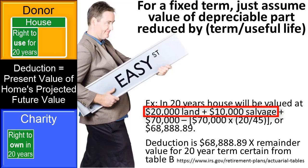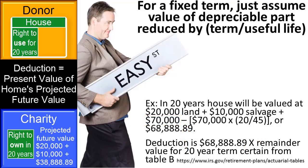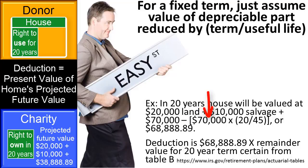The current land and salvage value of the building are not depreciable, so they are assumed to be worth the same amount in 20 years as they are today. The depreciable part of the personal residence will be reduced in value by the fixed number of years divided by the useful life of the building. For example, if a $100,000 residence was estimated to have a useful life of 45 years with land value of $20,000 and salvage value of $10,000, then in 20 years the estimated value would be the land of $20,000 plus salvage value of $10,000 plus the depreciable building of $70,000 minus depreciation of $70,000 multiplied by 20 divided by 45, or a total of $68,888.89.